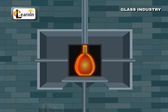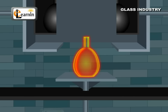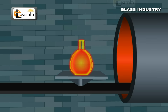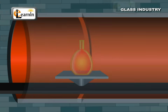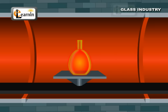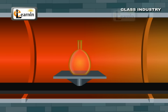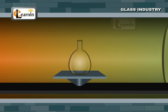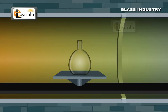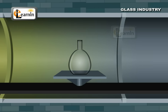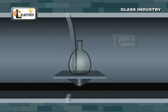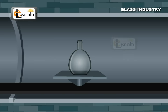Annealing. Usually, glass obtained by rapid cooling is brittle. So, glass is passed through a high temperature zone, then a low temperature zone in a long narrowed chamber by conveyor belt, where it cools slowly giving transparent glass. This process is called annealing. Annealing strengthens the glass.